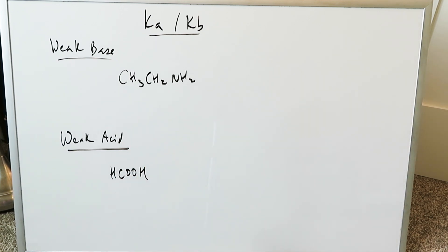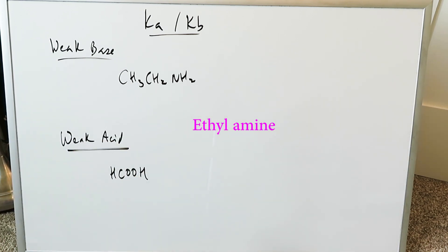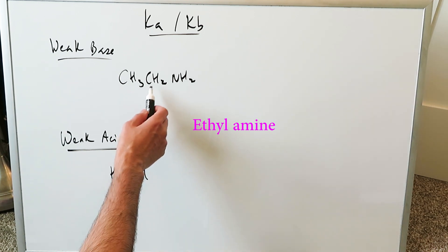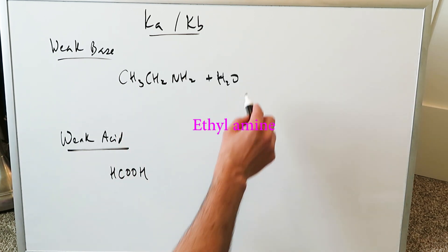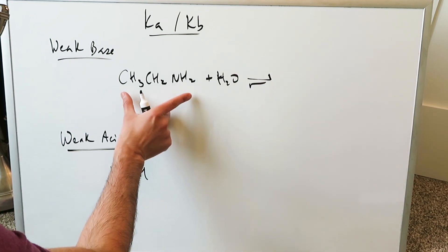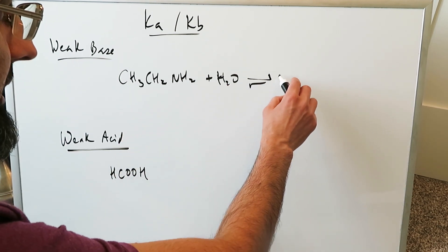The Ka and KB concept becomes relevant for weak acids and weak bases. Looking here first at a weak base: ethylamine is a good example of a weak base, as would be ammonia, but I'm looking at ethylamine. When you put this in the presence of water, you'll have a forward and a reverse reaction. You'll have ethyl ammonium and hydroxide.